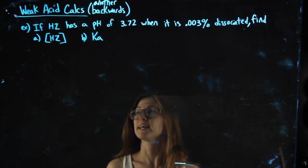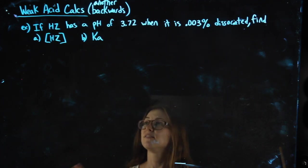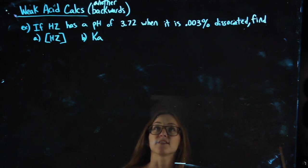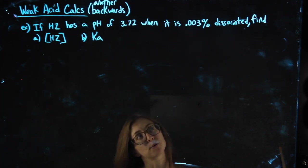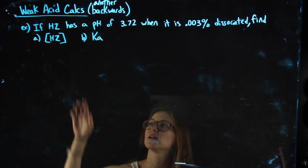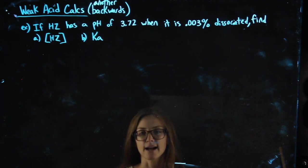Okay, another variation we can take would be something like this. If HC has a pH of 3.72 when it's 0.003% dissociated, find the concentration of HC, its molarity, and Ka.